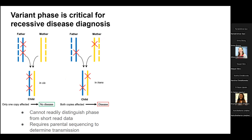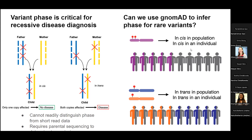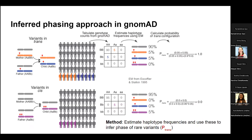Variant phase is critical to rare disease diagnosis, and we can't readily distinguish phase from short-read data — it requires parental sequencing to determine transmission. The question is: can we use GnomAD to infer phase for rare variants? If we can infer that variants are seen in cis in the population or in trans in the population, does that also infer they're in cis or in trans in an individual? We use haplotype frequency estimation to infer phase of rare variants and give them a P-trans value.